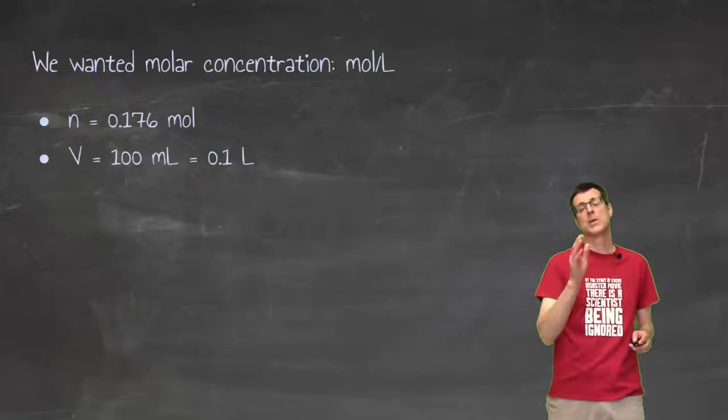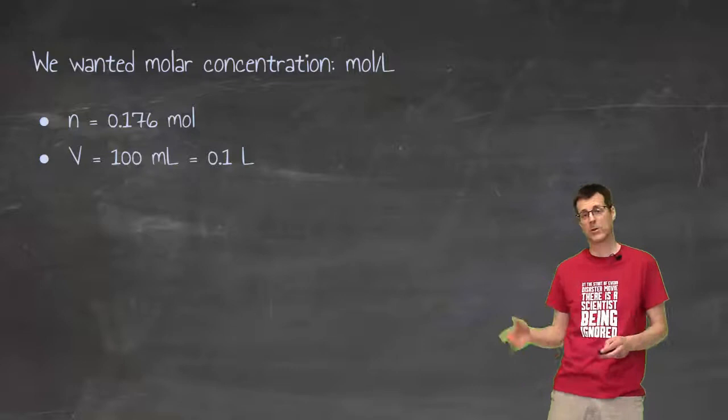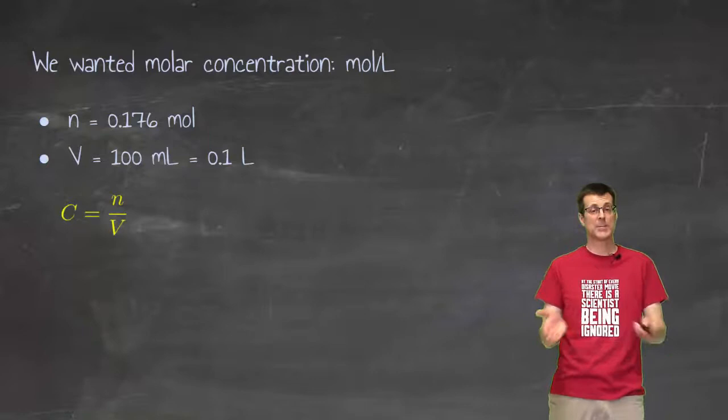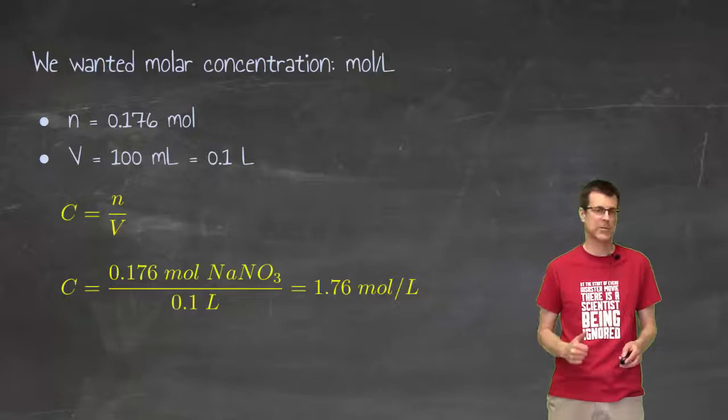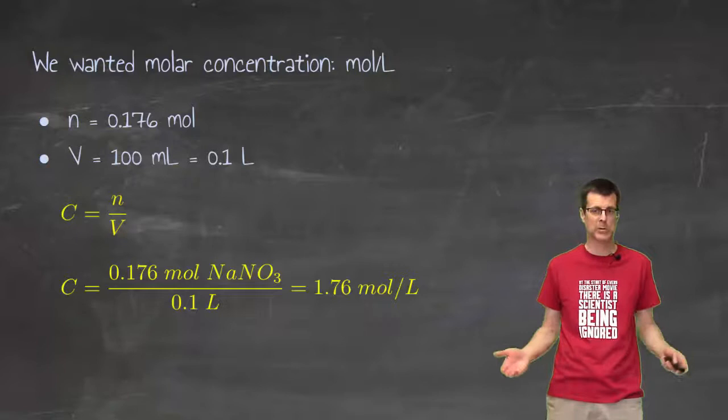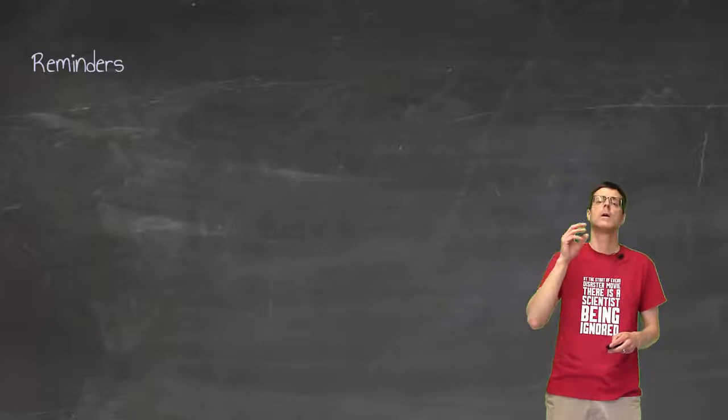Not there yet because I wanted molar concentration. So, I need to take that number of moles and I need to take the volume, but again, it was 100 milliliters. I need liters and I need to put it into my concentration formula. Number of moles divided by volume is that 0.176 moles of sodium nitrate divided by 0.1 liter, which gives me 1.76 moles per liter. Now, I'm done. That is the molar concentration.